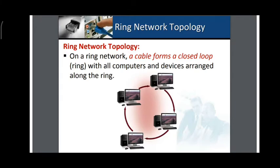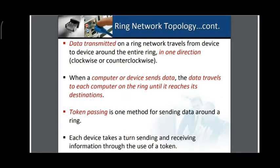Computers are connected in the form of a ring in one direction — it can be either in the clockwise direction or the anti-clockwise direction. This is called uni-direction — only one direction is possible. Data transmitted on a ring network travels from device to device around the entire ring in one direction, either clockwise or counterclockwise.